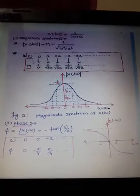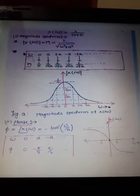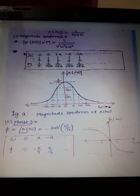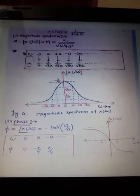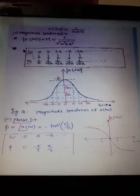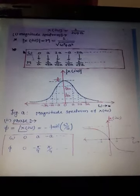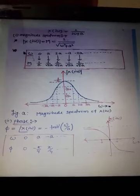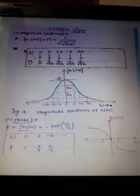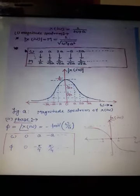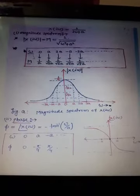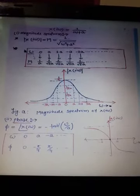We compute the magnitude at different values of ω. At ω = 0, magnitude = 1/a. At ω = a, magnitude = 1/(√2 · a). At ω = 2a, magnitude = 1/(√5 · a). The maximum value of magnitude occurs at ω = 0, which equals 1/a. We then plot the magnitude spectrum.